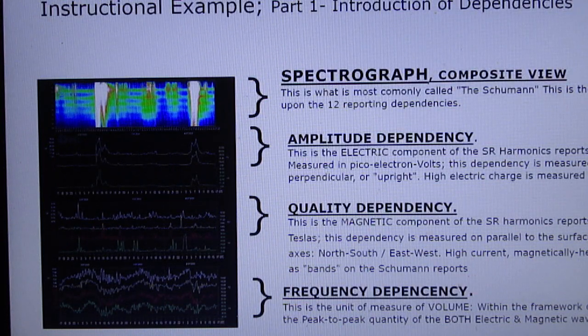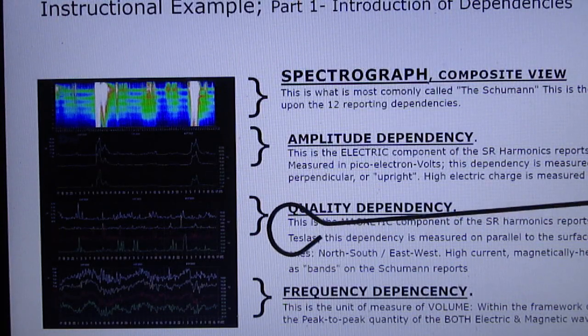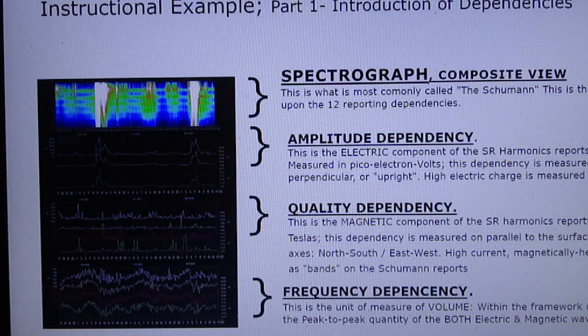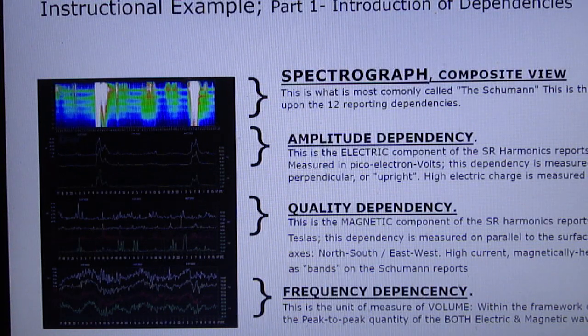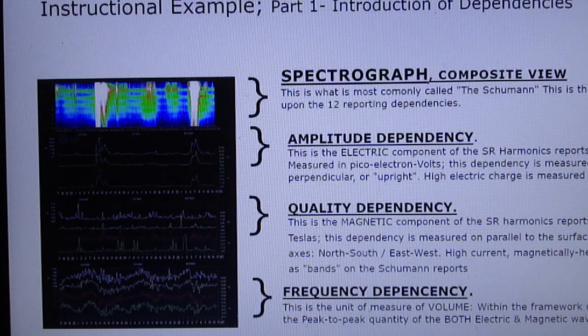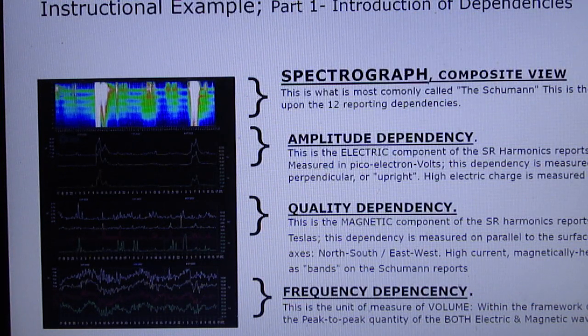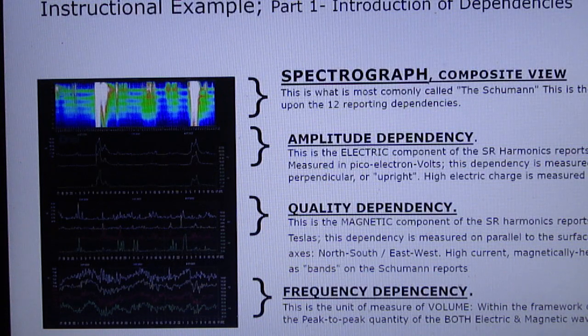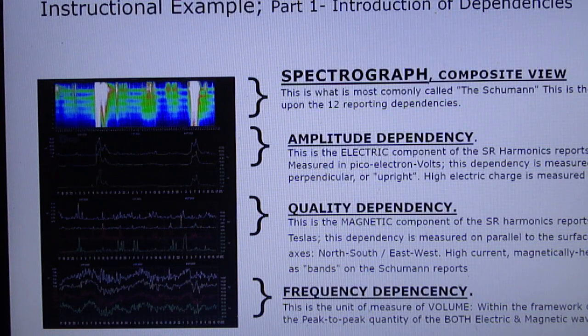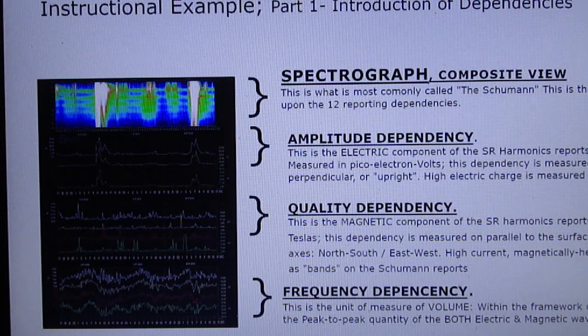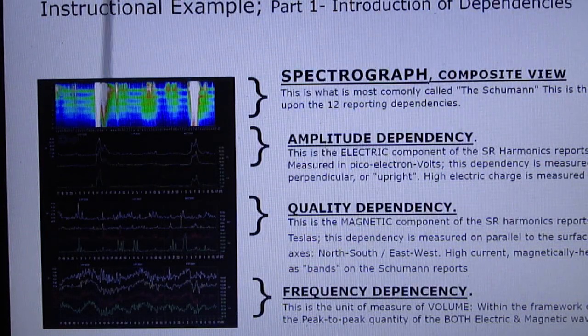The amplitude is the electric component of the Schumann resonance harmonics report. This is measured in pico electron volts, and a pico, the suffix pico, is fifteen zeros, or it's point one with fifteen zeros after it. So that's a pretty tiny number. This dependency is measured in the vertical, it is the uprights of the chart. So when you see these spikes, these daggers that are coming down from the top, those are the electric components to the reports.